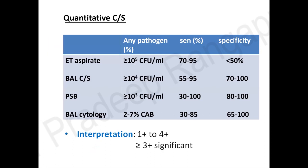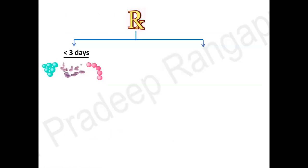When interpreting DPT cultures, quantitative estimation is important. For a DPT aspirate, colony count should be more than 10⁵ colony-forming units (sensitivity 70-95%, specificity less than 50%). For bronchoalveolar lavage culture, colony count should be ≥10⁴ (sensitivity 55%, specificity 70-100%). For protected brush specimens, more than 10³ colony-forming units. Many labs report as 1+ to 4+, and anything more than 3+ becomes significant.